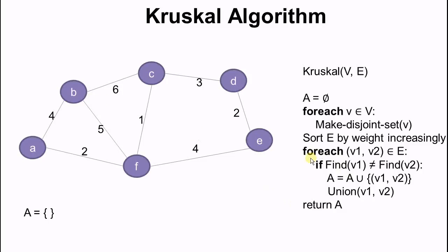Then for each edge that connects V1 and V2, the smallest edge will be taken first. If the disjoint set of V1 is not the same as the disjoint set of V2, then we push that edge into A, and then merge the disjoint sets of V1 and V2 into one disjoint set.